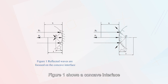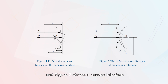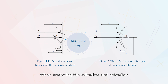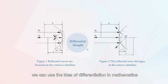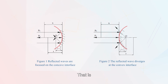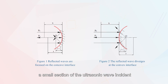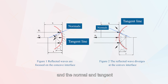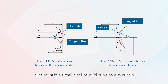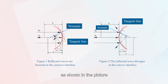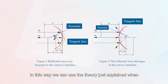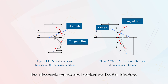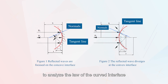Figure 1 shows a concave interface and figure 2 shows a convex interface. When analyzing the reflection and refraction of ultrasonic waves on curved surfaces, we can use the idea of differentiation in mathematics. That is, a small section of the ultrasonic wave incident on the interface is regarded as a plane, and the normal and tangent planes of that small section are constructed. In this way, we can use the theory for flat interfaces to analyze the law of curved interfaces.